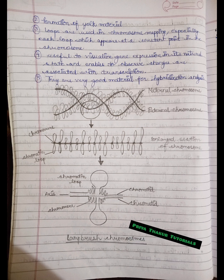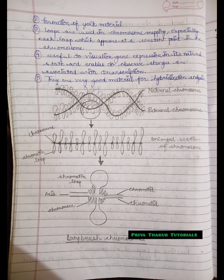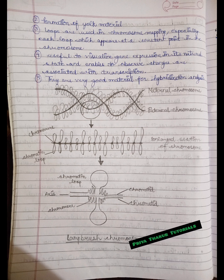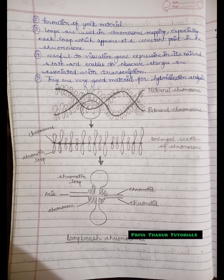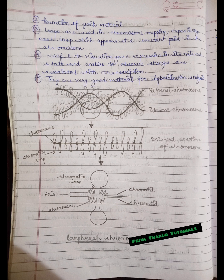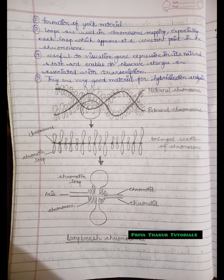Here is the structure of a lampbrush chromosome. We can see a maternal chromosome and a paternal chromosome. Zooming into one area, the second diagram shows a large section of chromosome where the chromomere is in the center and the arms are the chromatin loops. Zooming into one arm further, the third diagram shows the axis of the chromatin loop, illustrating why these are known as lampbrush chromosomes.